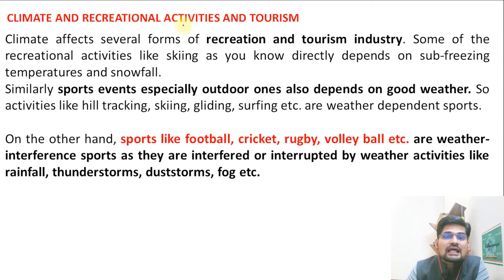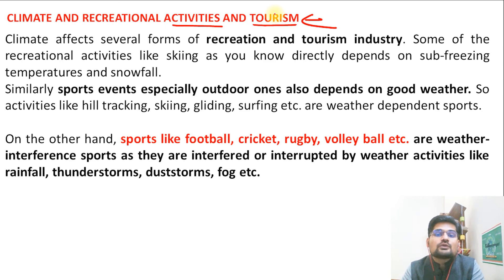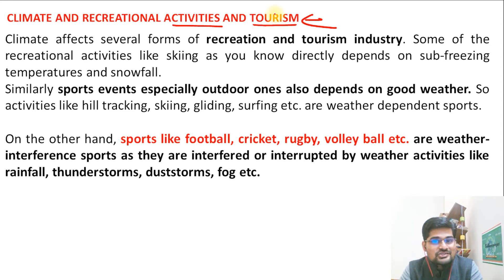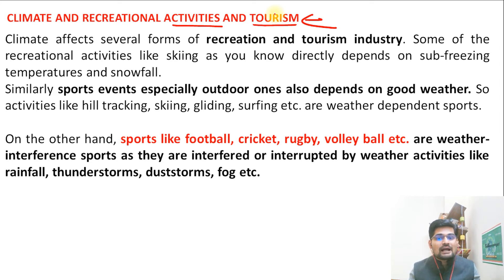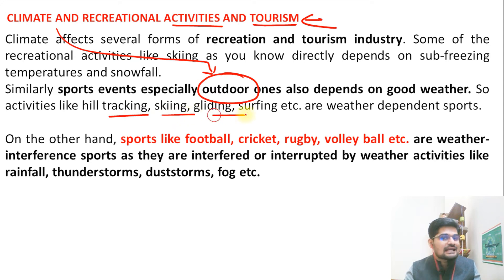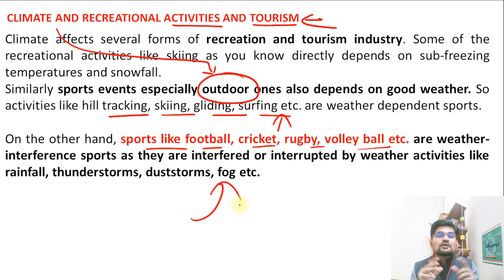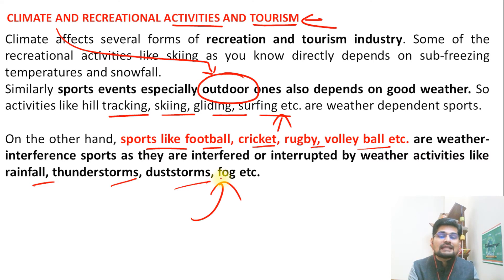Climate is also associated with recreational activities and tourism. The recreational and tourism industry completely revolves around the climatic regime on Earth. If climatic conditions in an area are not pleasant on a long-term basis, no one would visit. Outdoor activities like trekking, skiing, gliding, and surfing are all climate-dependent. Even sports like football, cricket, rugby, and volleyball are related to weather conditions, and many times they are interrupted by rainfall, thunderstorms, or dust storms. So climate positively and negatively impacts recreational, tourism, and sport activities.